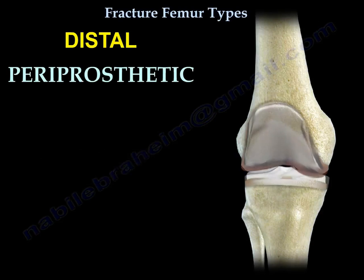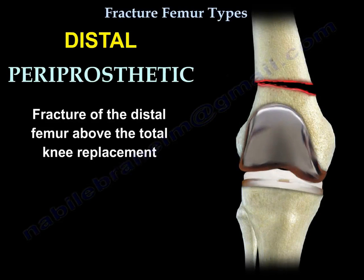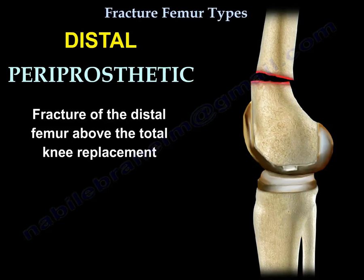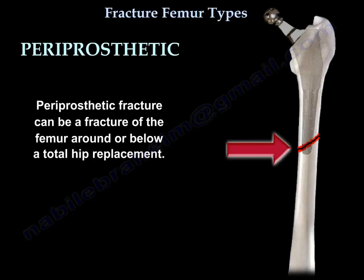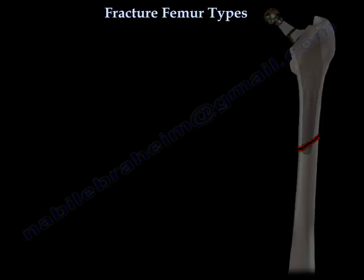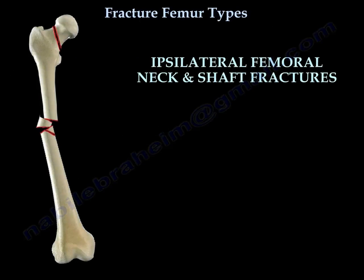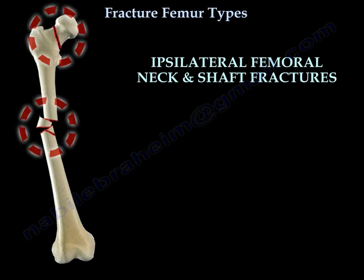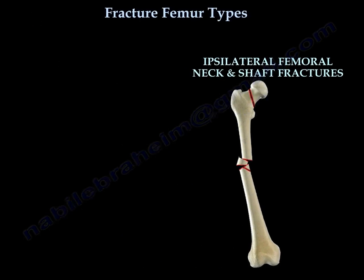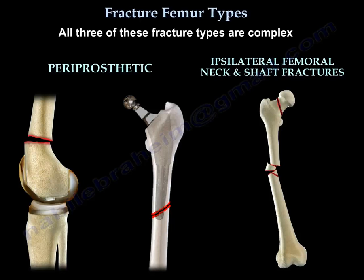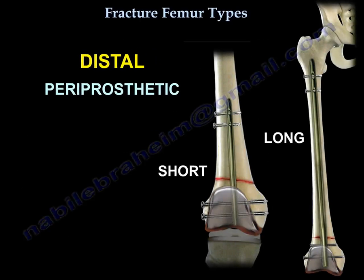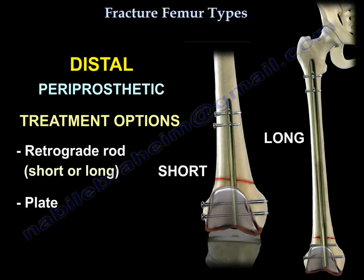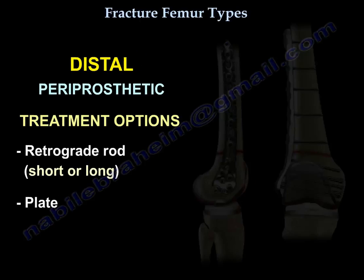There is also the periprosthetic fracture: a distal femur fracture above a total knee replacement, a fracture around or below a total hip replacement, or an ipsilateral fracture of the femoral neck and shaft — all three types are complex. A fracture above the total knee replacement can be treated by a rod or by a plate.